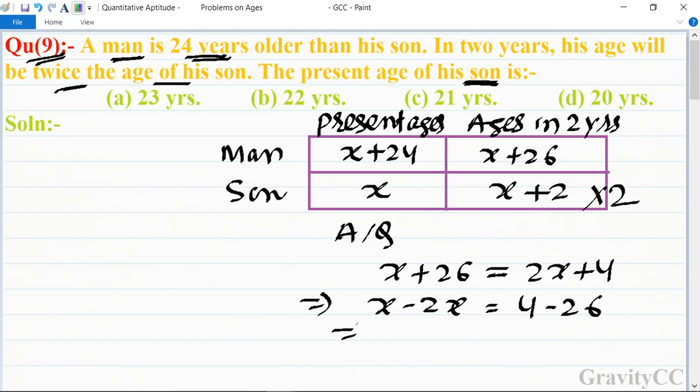This equals -x = -22. Minus minus cancel, so x equals 22.